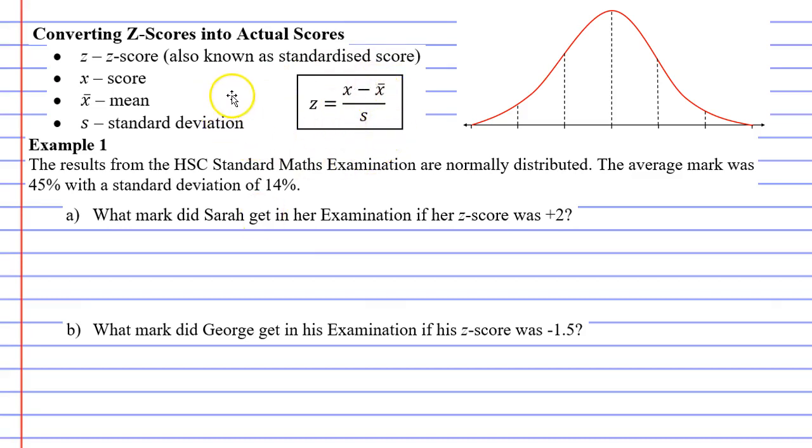We'll start by labeling the z-scores on our bell curve. First, I would like to label the mean. The average mark or the mean was 45% in the exam and that has a z-score of 0. Our standard deviation is 14%. So as we move to the right we're going to add on 14 each time. So 45 plus 14 comes to 59, that's a z-score of positive 1, and 59 plus 14 gives us 73, that's a z-score of positive 2, and 73 plus 14 is 87, that's a z-score of positive 3.